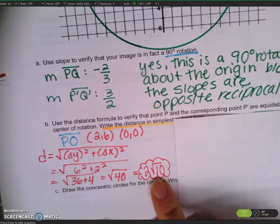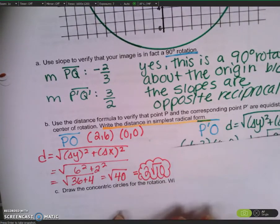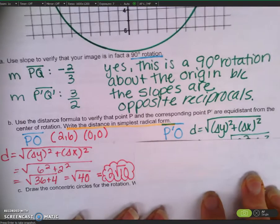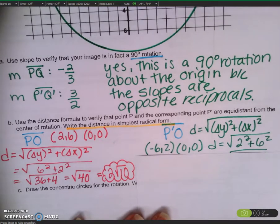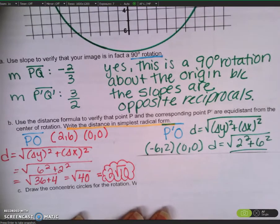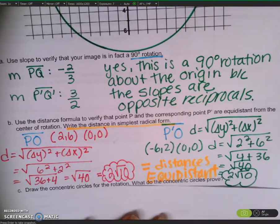Since we have two radicals and it needs to be equidistant, we have to check out the distance of segment P-prime O. P-prime is the coordinates negative 6, 2, and O is the origin 0, 0. When we figure out the distance between those, we find that the distances are equal, meaning they're equidistant.